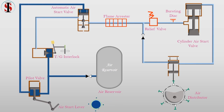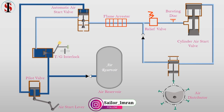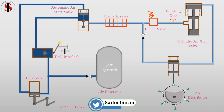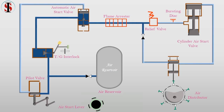To start the main engine, first the turning gear needs to be disengaged. When the turning gear is disengaged, the pilot air passes through it and then waits at the automatic air start valve. Once the air start is given by moving the lever, the pilot valve is pulled down by the linking mechanism, and all the air on top of the automatic air start valve is vented — there is no more positive closing.